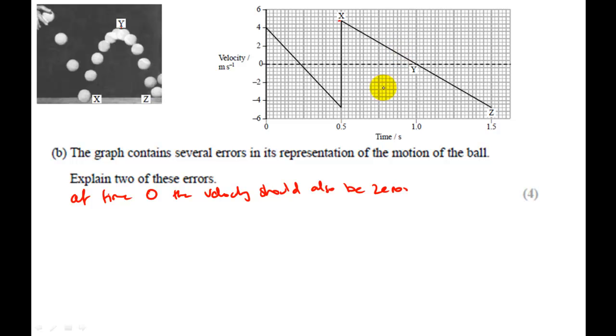Another point is that if you look carefully, you can see that the gradient of this line and the gradient of this line are not the same. The gradients are the acceleration. Since they're both accelerating due to gravity, then you'd expect them to be the same. So there's obviously an error there as well.